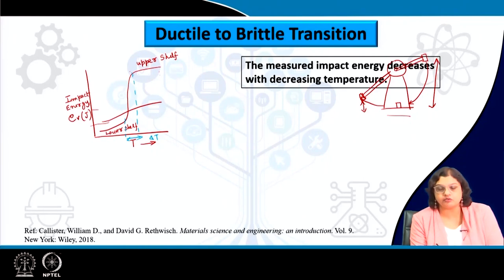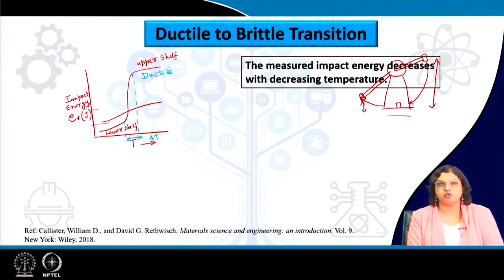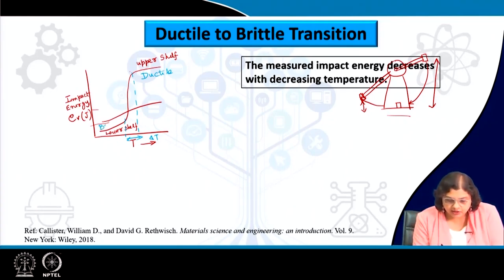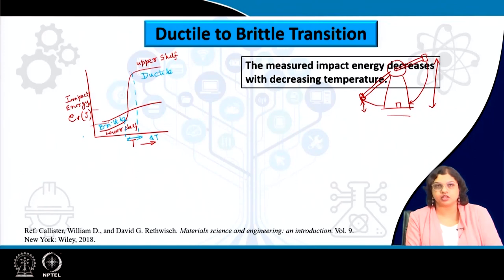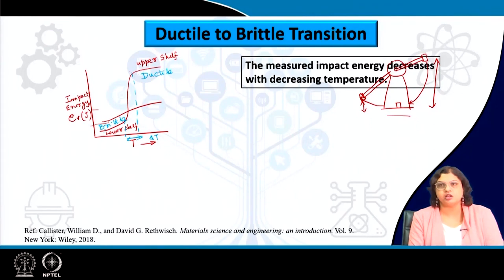When the material is absorbing a higher amount of energy, some kind of ductile deformation is happening, so the failure in this case will be a ductile mode. On the other hand, if we are performing experiments at lower temperature, there will be a brittle mode of failure, reflected in consuming lesser energy. The same material, just by changing the temperature, shows a completely different mode of failure.